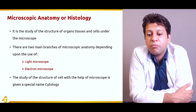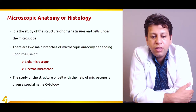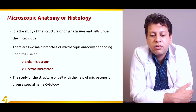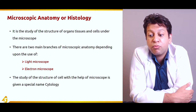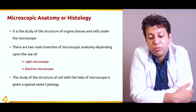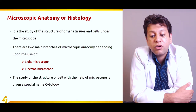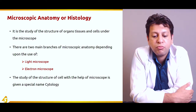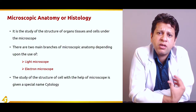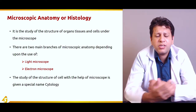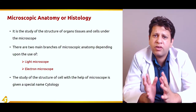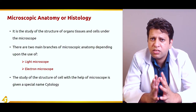Microscopic anatomy, or histology, is the study of the structure of organs, tissues, and cells under a microscope. There are two main branches depending on the microscope used: light microscopy or electron microscopy. The study of the structure of a cell specifically under a microscope is given the special name cytology — a sub-branch of histology. Studying any structure under the microscope is histology; studying specifically cells only under the microscope is cytology.